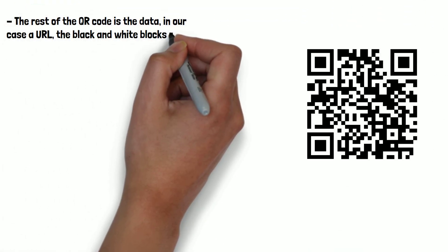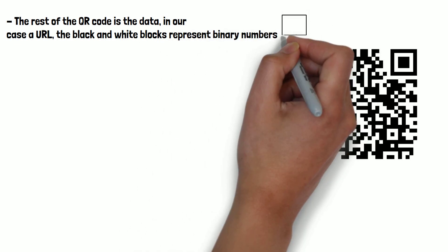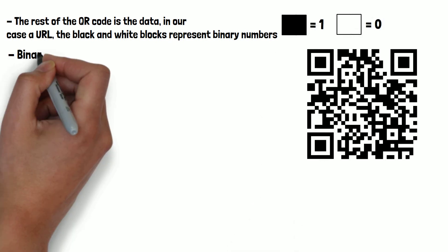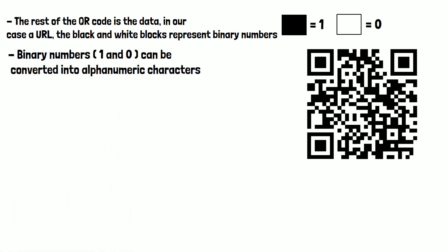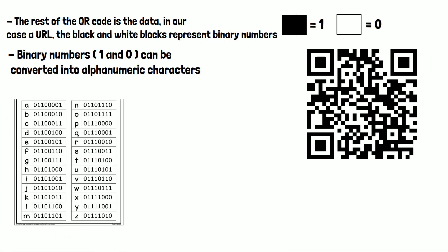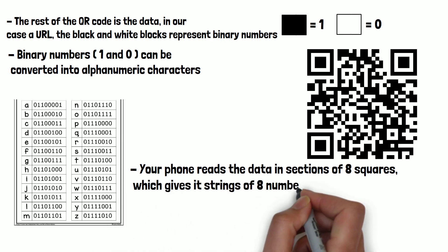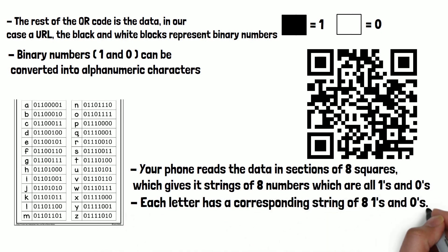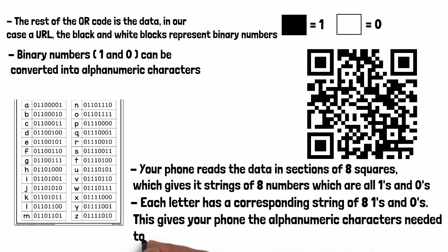The rest of the QR code is the data — in our case, a URL. The black and white blocks represent binary numbers, or ones and zeros, with black representing one and white representing zero. Binary numbers can be converted into alphanumeric characters. Here's a quick example of some letters in the alphabet written in binary code. Your phone reads the data in sections of eight squares, which gives it strings of eight numbers which are all ones and zeros. You can see how each letter has a corresponding string of eight ones and zeros, giving your phone the alphanumeric characters needed to create the URL. This is how your phone gets the URL from a QR code.